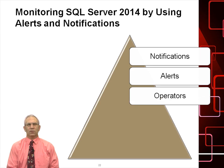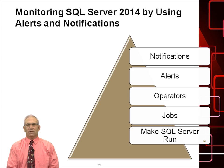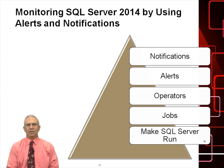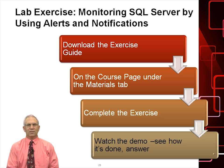So now we have notifications, alerts, operators, and jobs. The combination of all of these runs the entire system. First, set up an operator — somebody who's going to receive the notification. A job calls a notification and sends it to an operator. An alert occurs when you're about to encounter some sort of error, and the operator will be notified. If you don't have any combination of these, the system will still run, but if something goes wrong you won't be made aware until after it happens. Please download the exercise guide on the course materials tab, complete the exercise, watch the demo, and see how it's done. Thank you for attending.